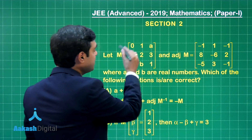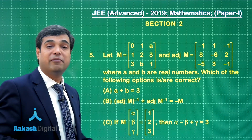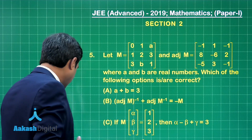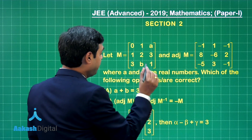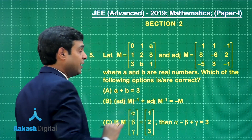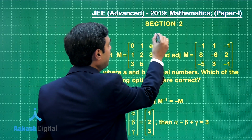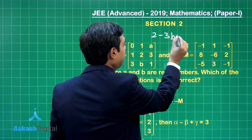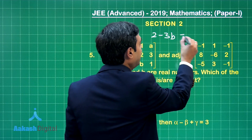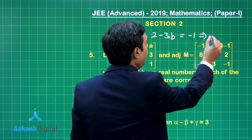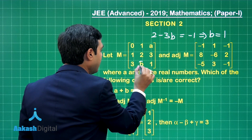If you talk about this matrix M and try to find its adjoint, you would be finding cofactors. For the cofactor of element 0, it is obtained as 2 minus 3B. So 2 minus 3B equals A11 which is equal to minus 1. From here we simply obtain the value of B as 1.